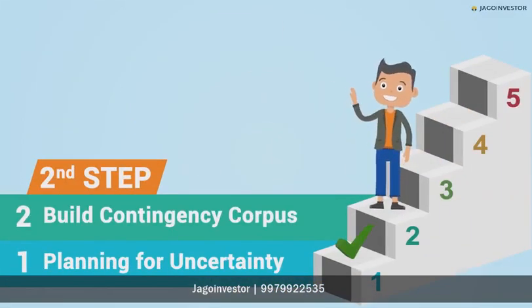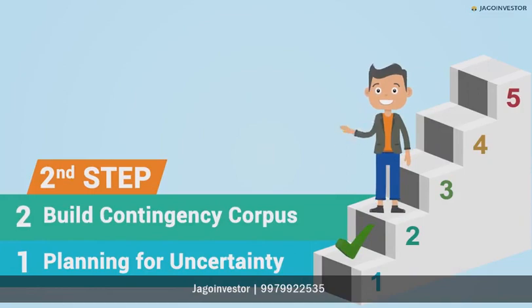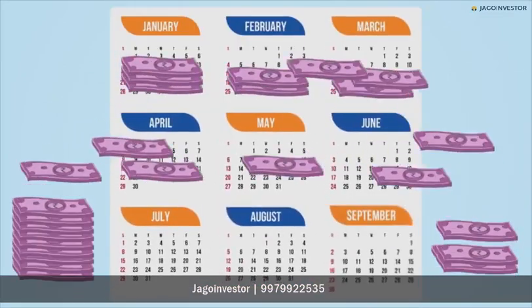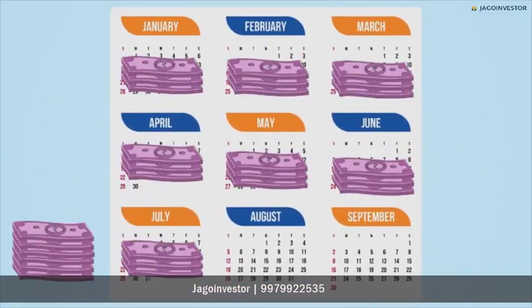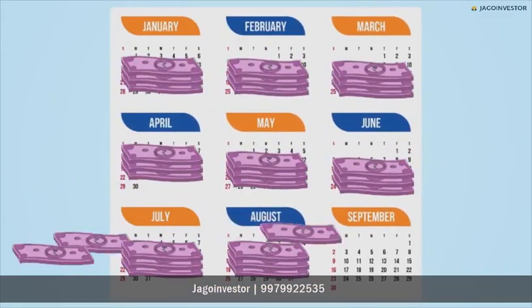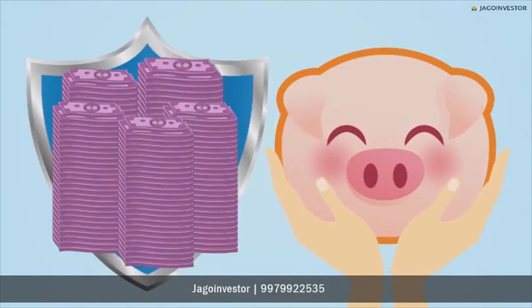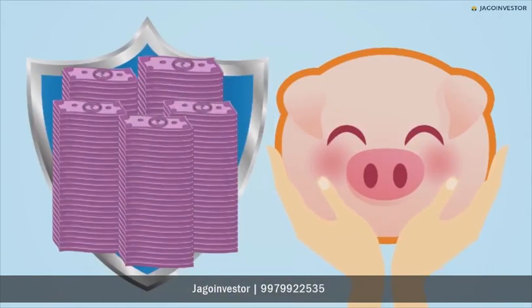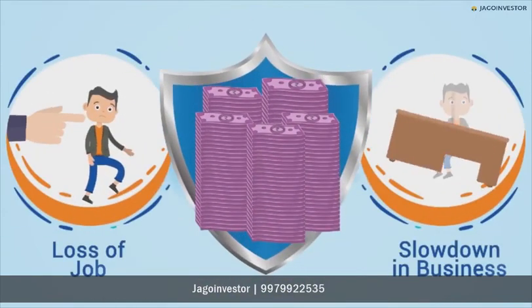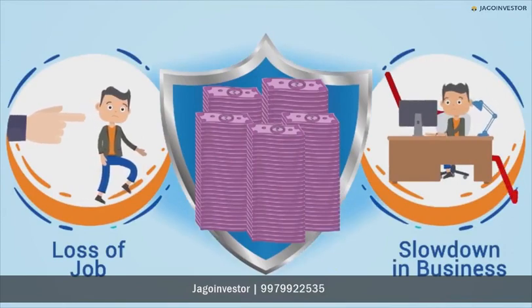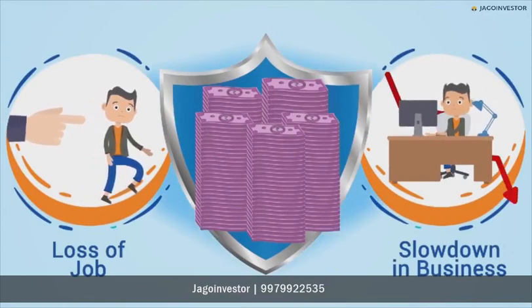Build Contingency Corpus: The second step is to build a contingency corpus of up to 6 to 9 months of your monthly expenses. This will protect your long-term investments from contingencies like loss of job or slowdown in business.